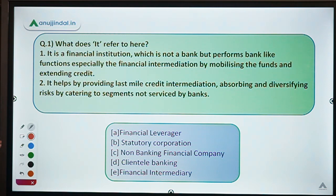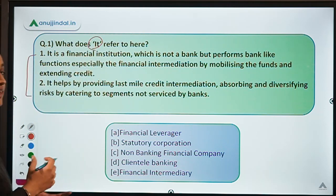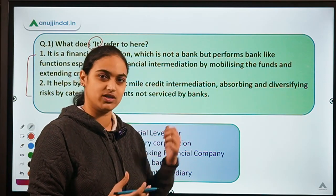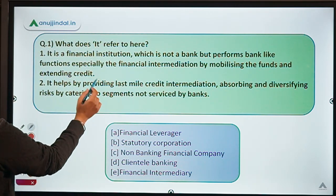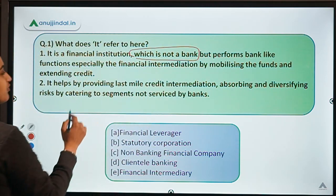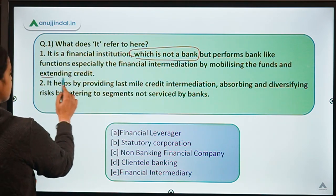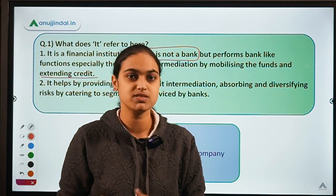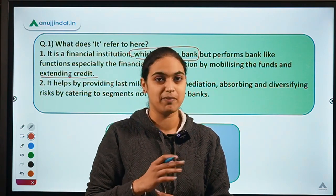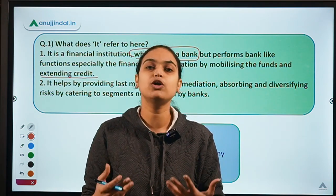This is the very first question. There are two statements mentioned, and they're asking about the concept being discussed. The first statement says: it is a financial institution which is not a bank but performs bank-like functions, especially financial intermediation by mobilizing funds and extending credit. So they are talking about institutions or firms performing functions like that of a bank — accepting deposits, making loans, financing different projects. What do we call such firms?